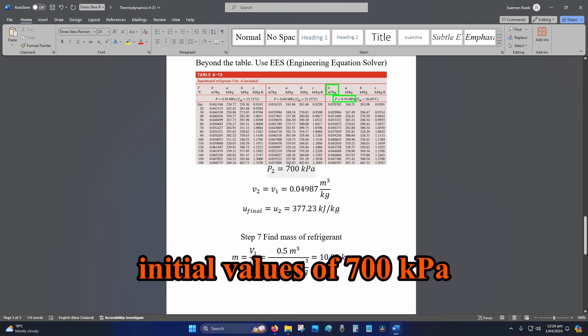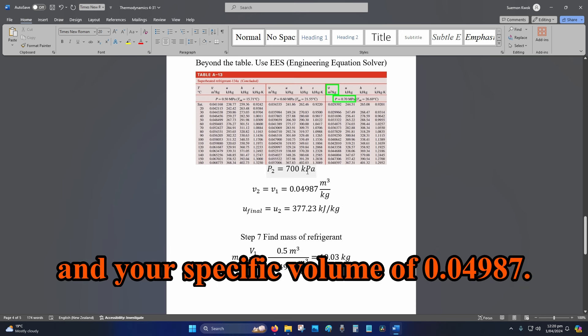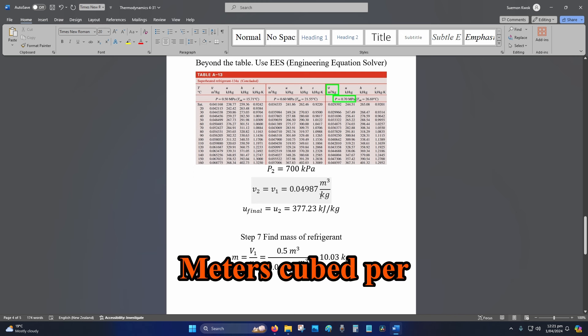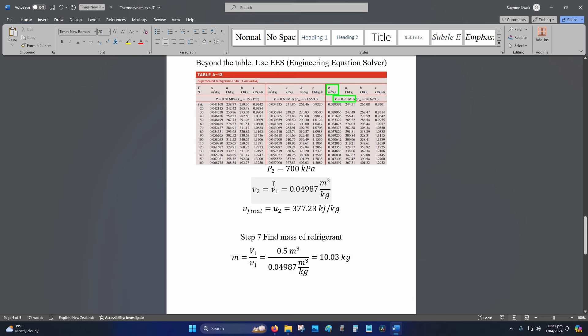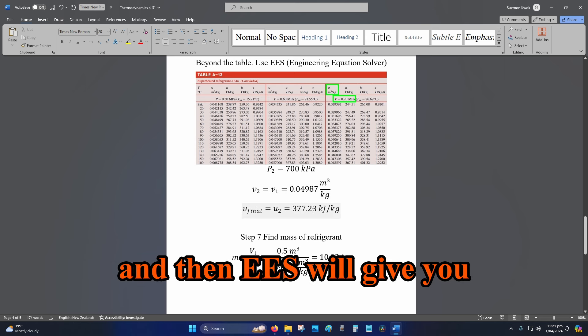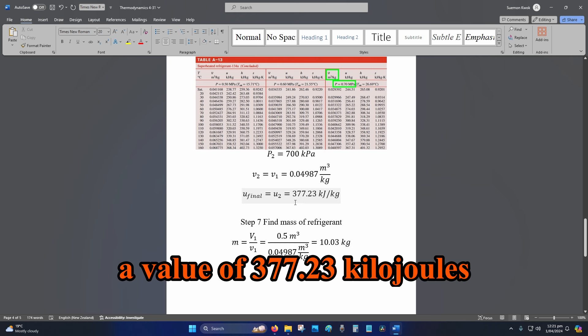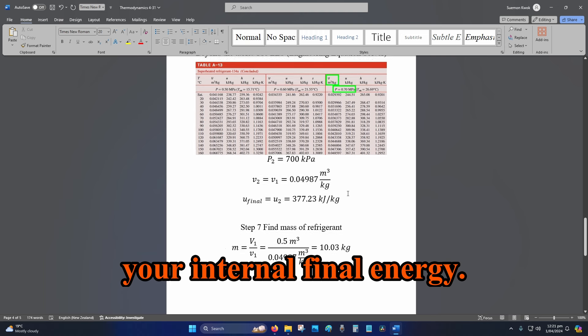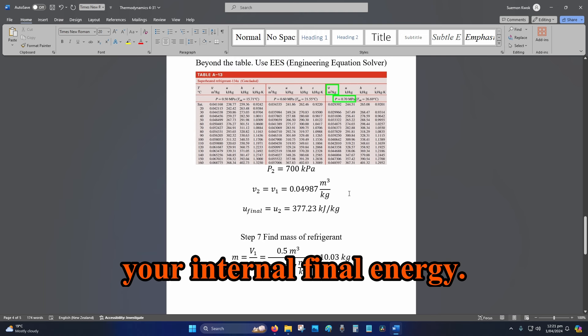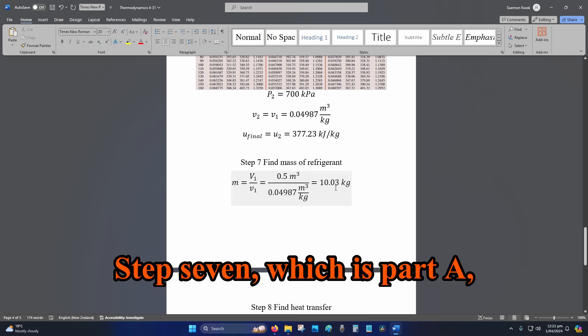You plug in your initial values of 700 kPa and your specific volume of 0.04987 m³/kg. Set in those variables, and then EES will give you a value of 377.23 kJ/kg, and that is your final internal energy.